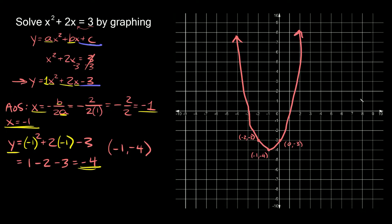Wherever the parabola hits the x-axis, those are where your solutions are. You can see the parabola hits the x-axis at about negative 3 on one side, and at about positive 1 on the other side. So the x-intercepts are at negative 3 and positive 1, which means those two numbers are solutions to our original equation x squared plus 2x is equal to 3. We can check them just in case.